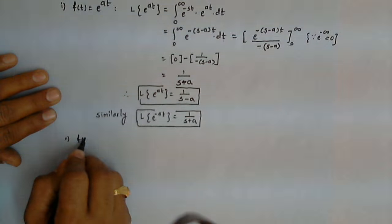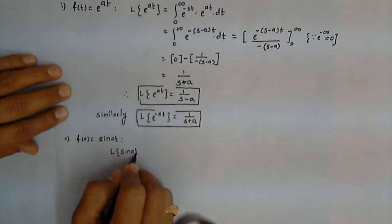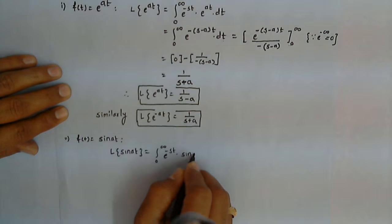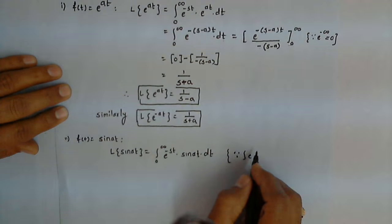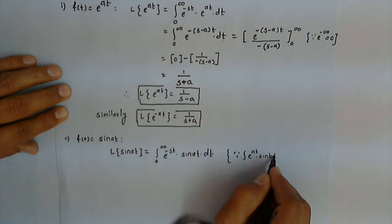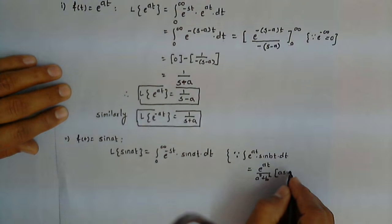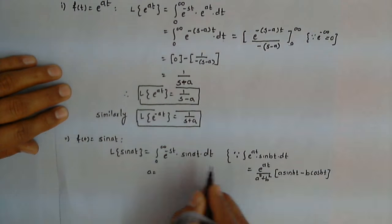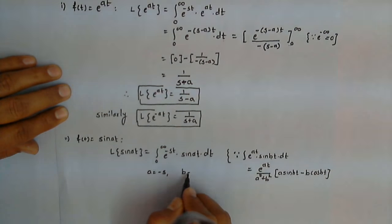Now let's see the second function: f(t) equals sine(at). The Laplace transform of sine(at) by definition is the integral from 0 to infinity of e raised to minus s t times sine(at) dt. Using the standard formula: the integral of e raised to a t times sine(bt) dt equals e raised to a t upon (a squared plus b squared) times (a sine(bt) minus b cos(bt)). Comparing with our integral, a becomes minus s and b becomes a.